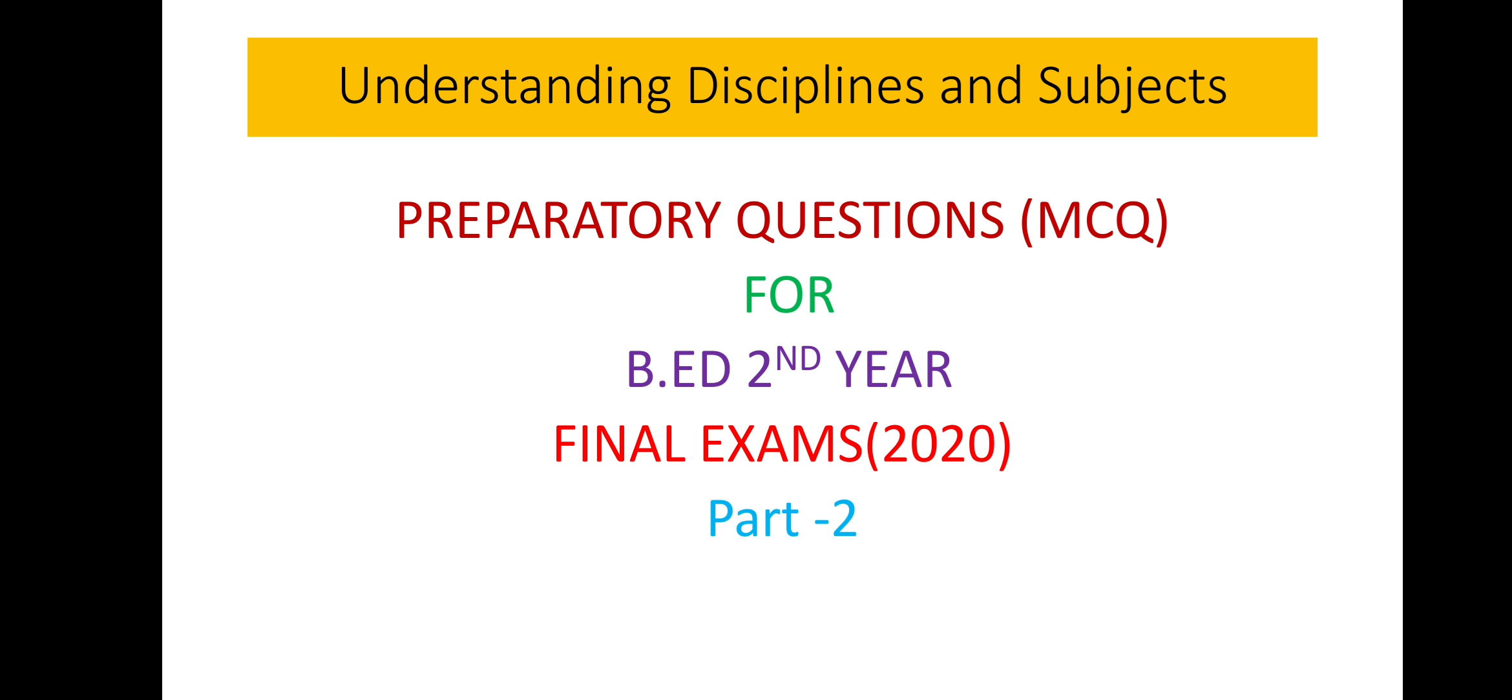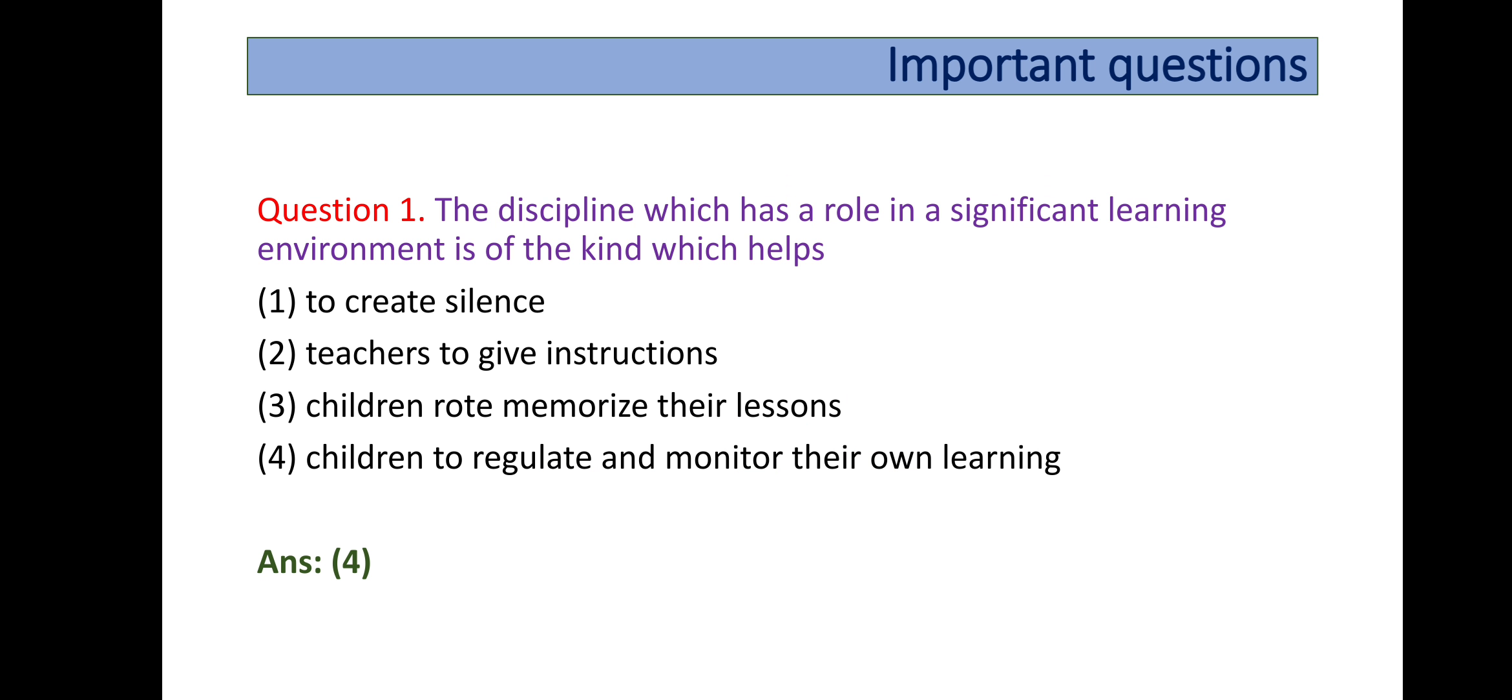If you are done, let's start doing practice. The very first question is: the discipline which has a role in significant learning environment is of the kind which helps children to regulate and monitor their own learning. Option 4 is correct because we want children to be independent. We don't want to make children slaves, so option number 4 is correct so that they can monitor or regulate their own learning.